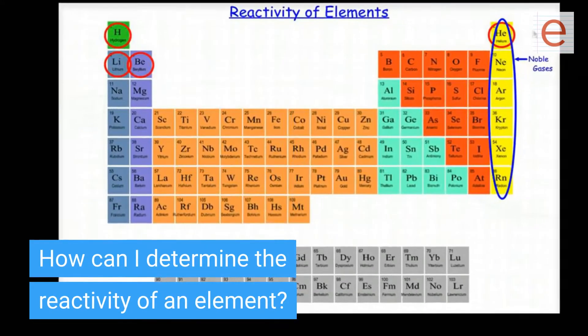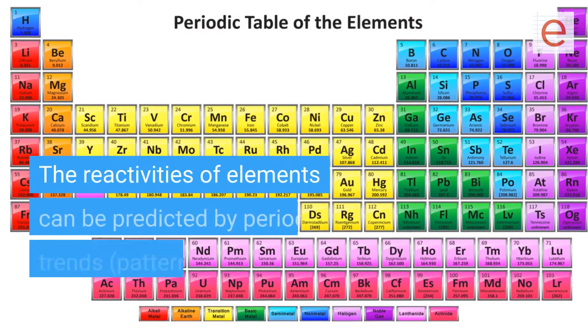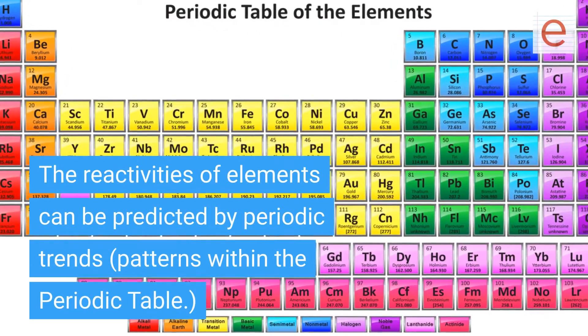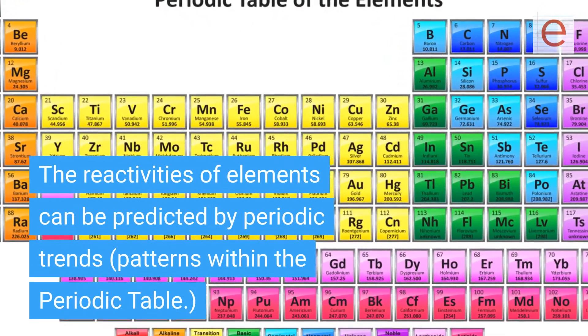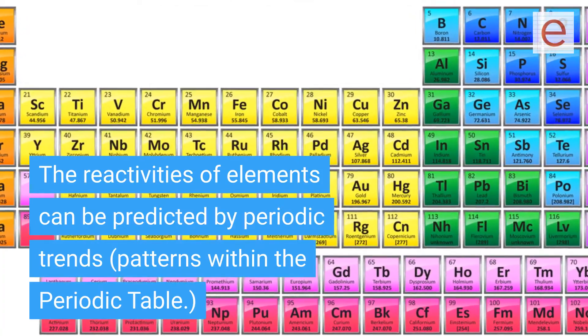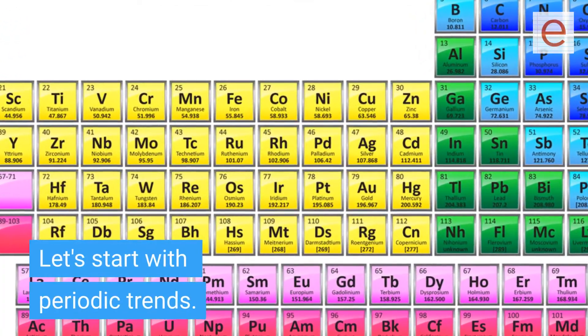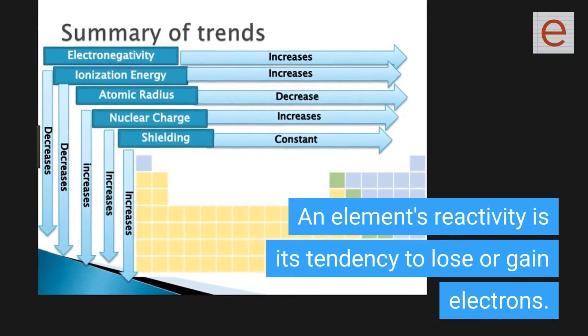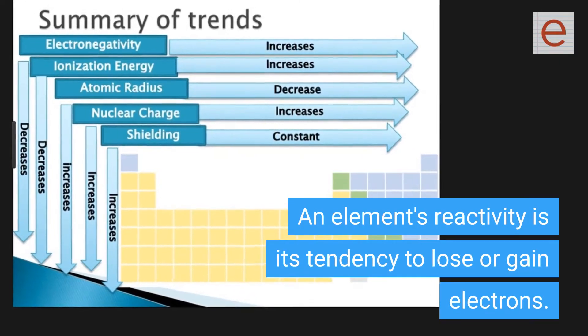How can I determine the reactivity of an element? The reactivities of elements can be predicted by periodic trends and patterns within the periodic table. Let's start with periodic trends. An element's reactivity is its tendency to lose or gain electrons.